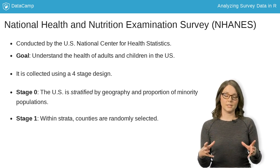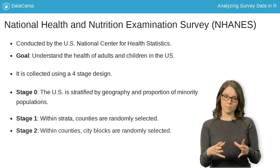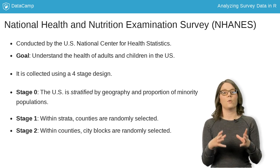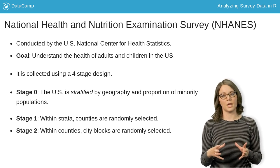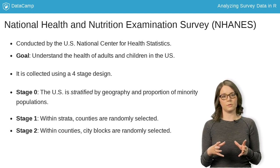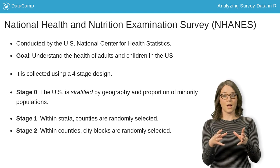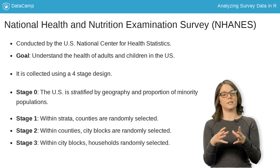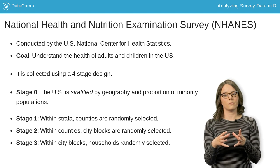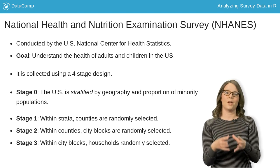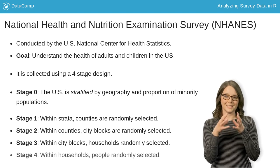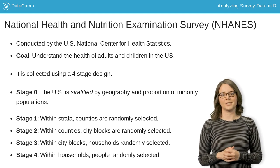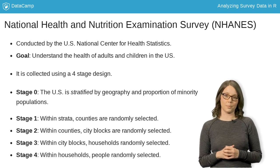From the sampled counties, city blocks are randomly selected, where again, more populated blocks are more likely to be sampled. From the sampled city blocks, households are randomly selected based on demographic information. And lastly, within the sampled households, people are randomly selected for inclusion in the sample.